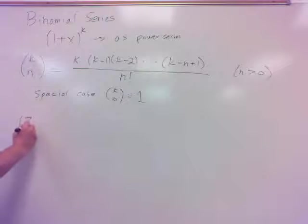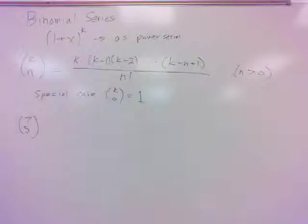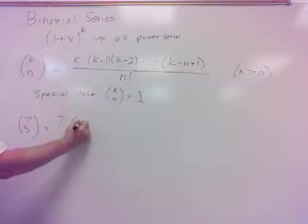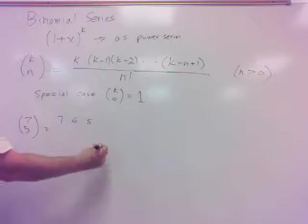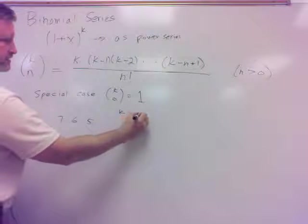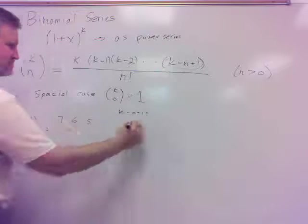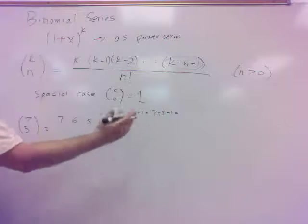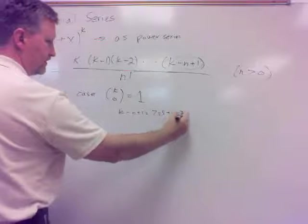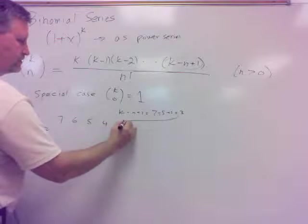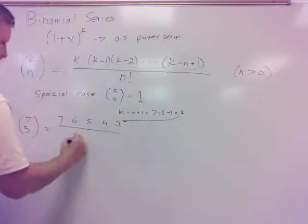So, (7,5) in this notation would start out, we start with 7, then we do minus 1 would be 6, then we do 5, until we get to this. So let's calculate. k minus n plus 1 would be what? 7 minus 5 plus 1, which does work out to be 3. So I need to do that all the way down to 3. Then on the bottom would be 5 factorial.